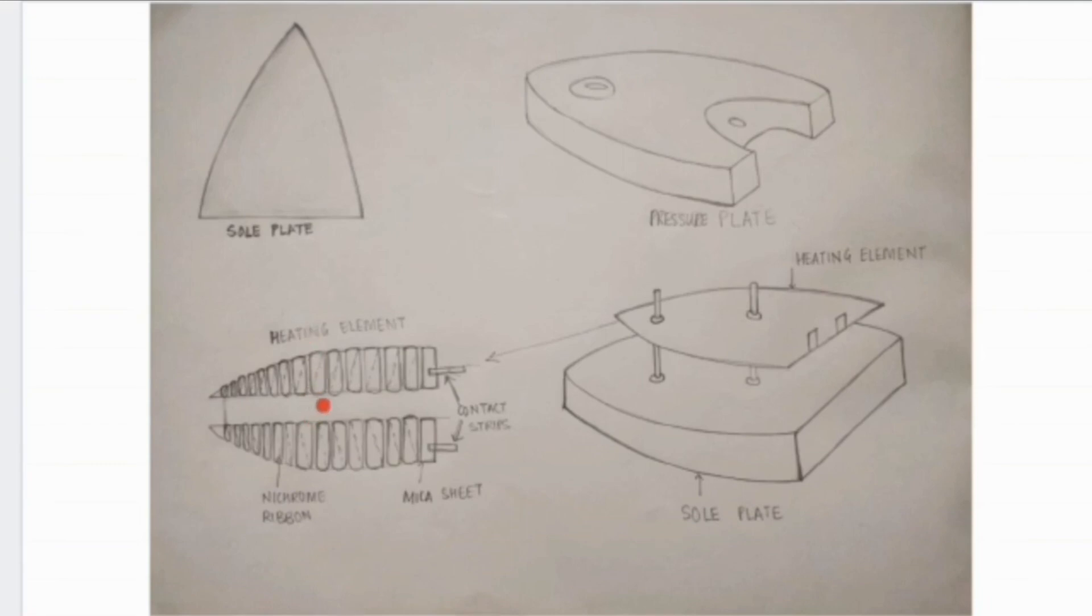The electric iron works on the heating principle. The heating principle states that when current is passed through the wire, it gets heated up. This is due to high resistance. The supply is connected to the heating element. As the resistance is very high, it resists the flow of current and hence it leads to heating. In this way, electric energy is converted to heat energy.